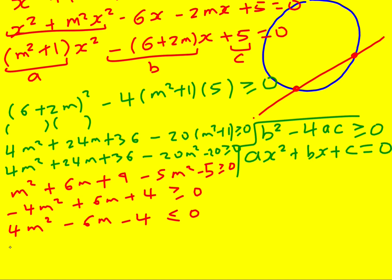Okay now there's another common factor. So I can divide through by 2. 2m squared minus 3m minus 2 is less than or equal to 0. And now I'm going to factorize.